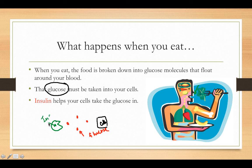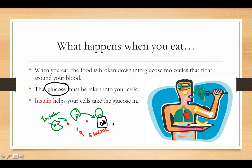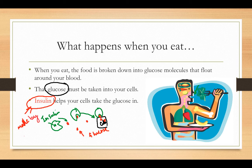Insulin is a hormone made by your pancreas. Think of it like a little pac-man — it comes in, grabs the glucose, holds on to it, and escorts it into the cell. That is the way we get glucose into the cells. Glucose couldn't get in on its own without the help of insulin. This is also why we call the pancreas an endocrine organ, because it releases hormones.